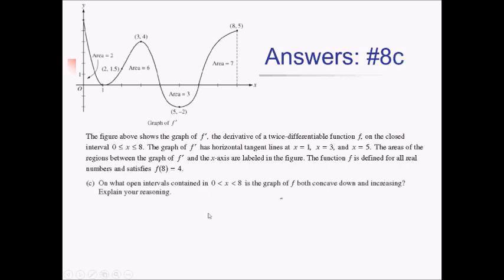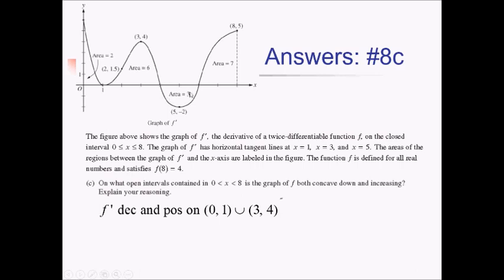For this part, we want to know on what intervals between 0 and 8 is the graph of f both concave down and increasing. If f is concave down, it means f prime must be decreasing. If f is increasing, it means f prime must be positive. So we're looking for intervals where f prime is positive and decreasing. The interval from 0 to 1 seems to be a positive decreasing interval. The interval from 3 to 4 is also a positive decreasing interval. This next interval is negative, and here we're positive but increasing. So only 0 to 1 and 3 to 4 — f is concave down and increasing on those same intervals.